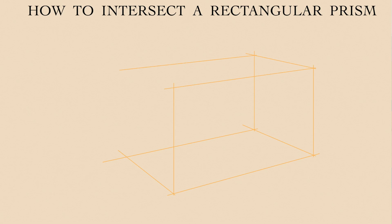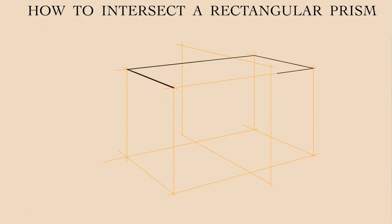Many man-made objects, including furniture, architecture, machinery, packaging, etc., consist of various rectangular prisms, so knowing how to intersect them is an important topic to know. It is especially needed if you want to draw buildings, interiors, or make some industrial design, for example.